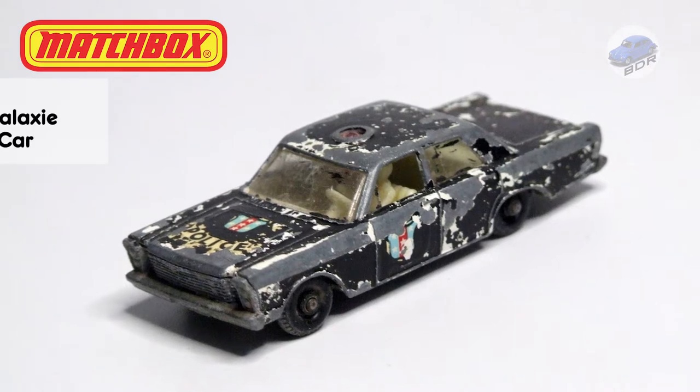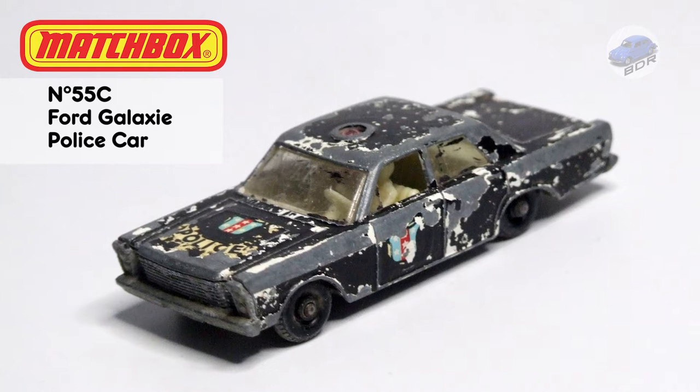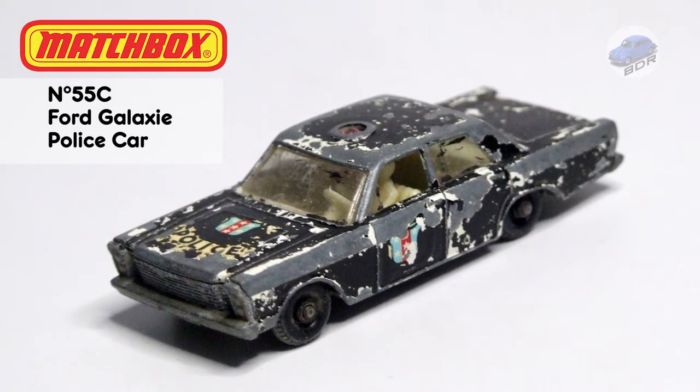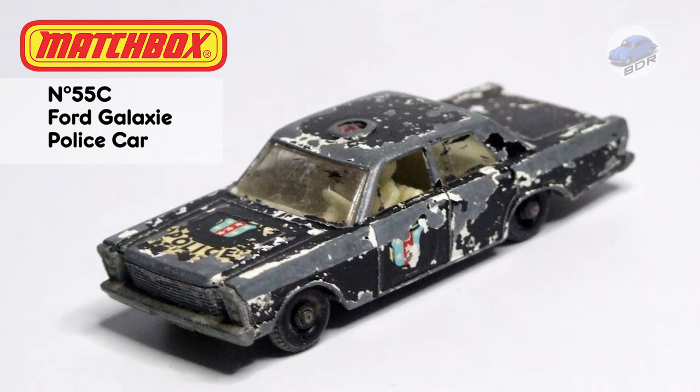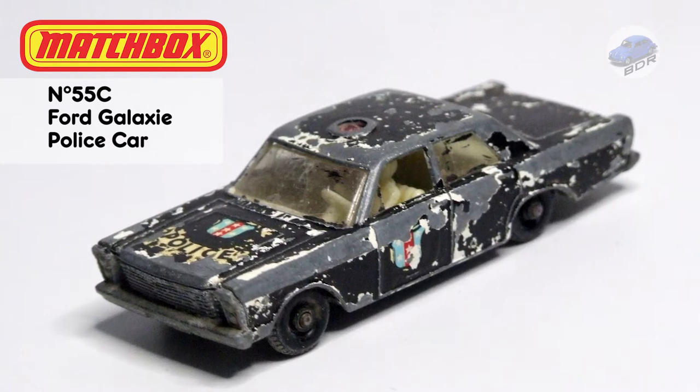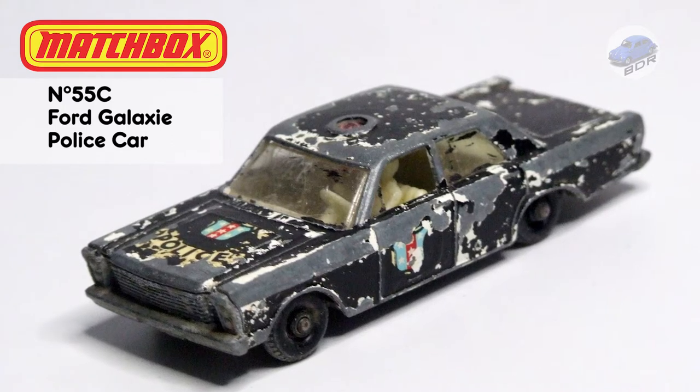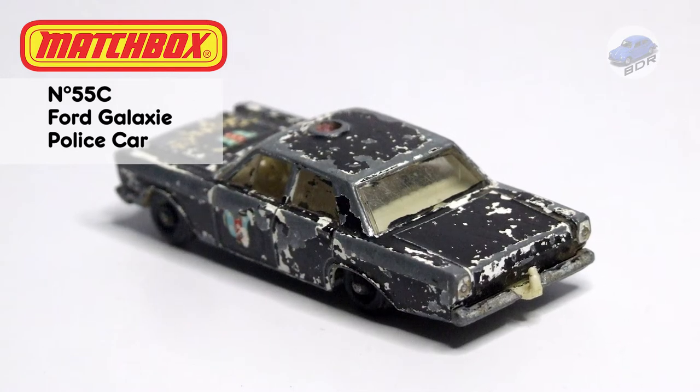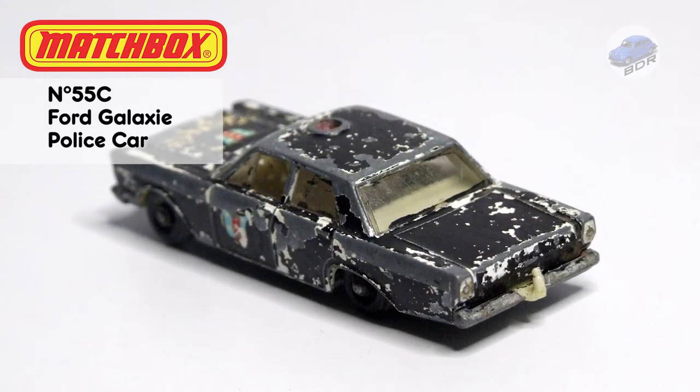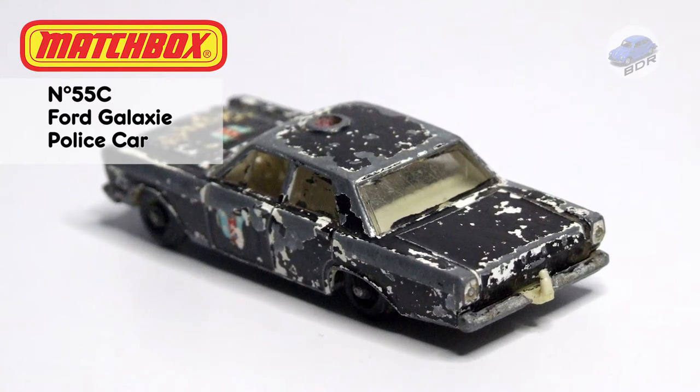Hello and welcome to another episode of Belgian Diecasts Restorations. My name is Johan and in this video I have another classic Matchbox car on my workbench. We are looking at the number 55C Ford Galaxie police car. This 1:73 scale model was produced between 1966 and 1971. It's a very simple model with no opening doors and the only feature is the driver in the interior. Just a car you loved pushing around as a kid.